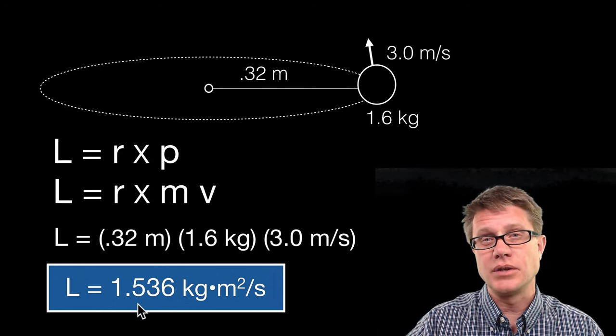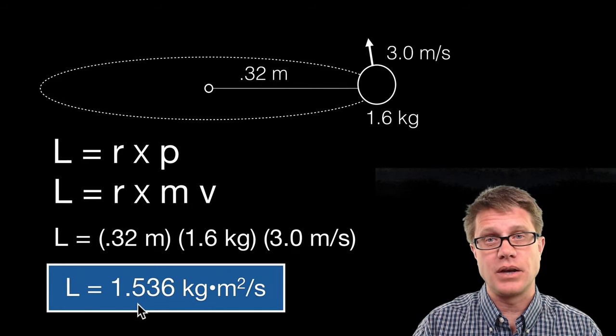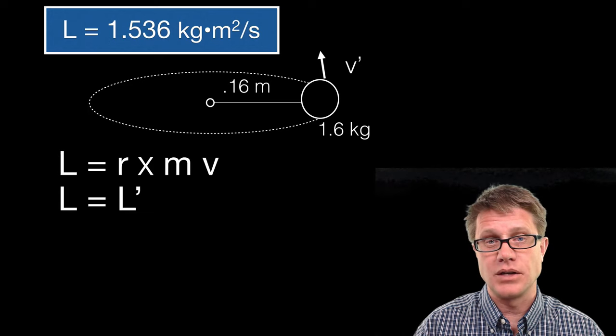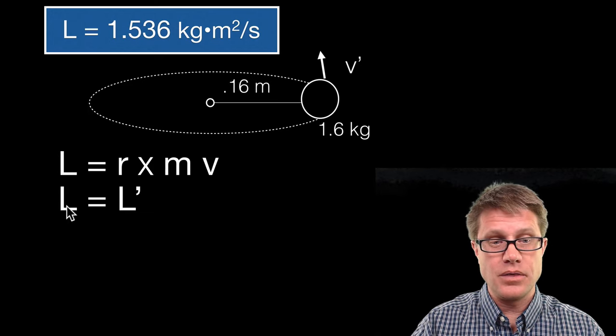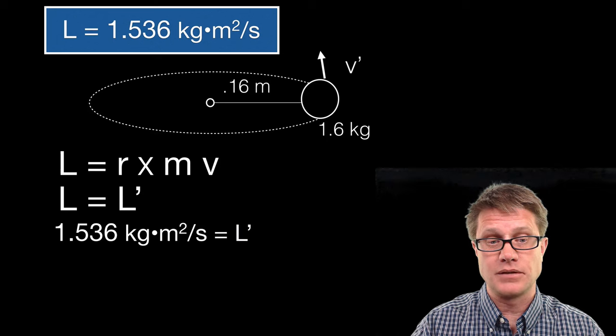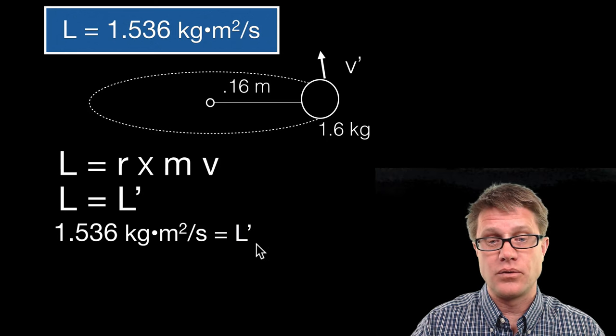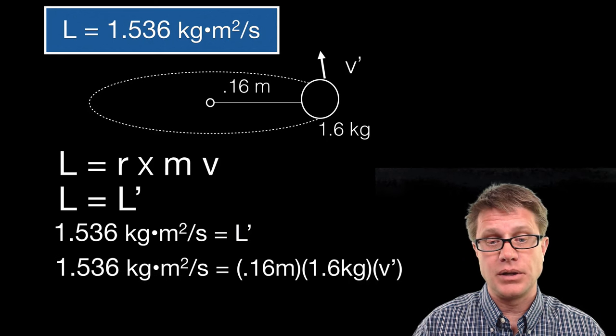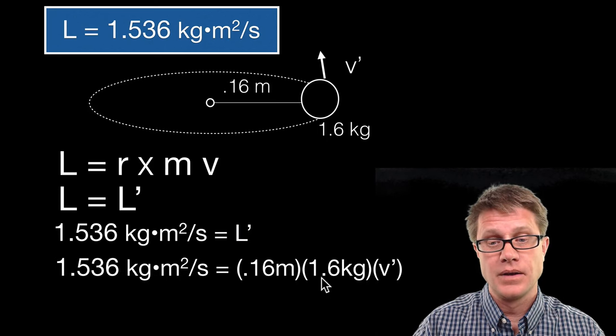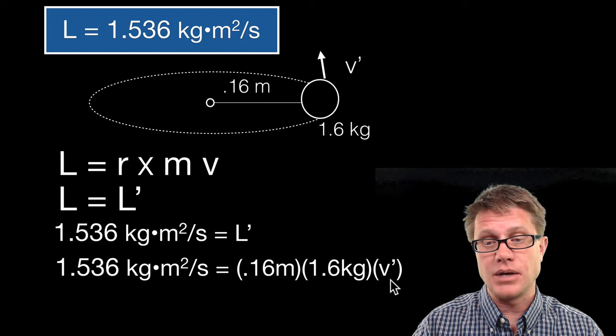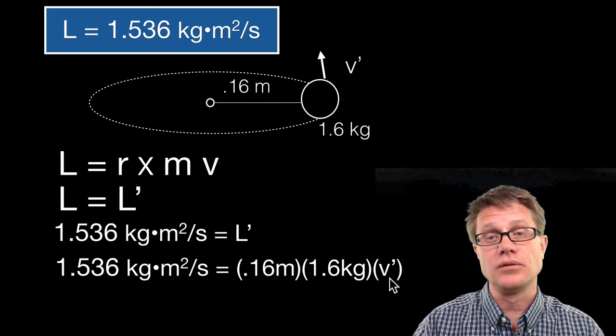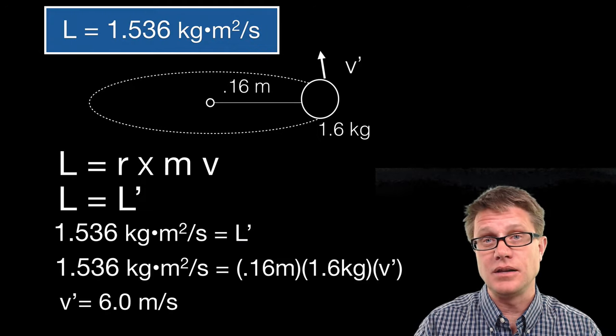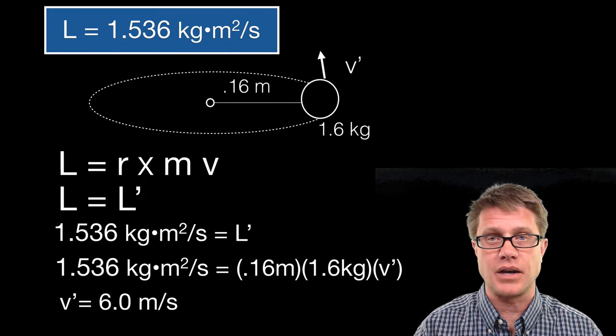Because we are going to see what happens if we take the radius and we cut the radius in half. So we are going to decrease that radius. So now it is 0.16 meters. And so I know this. I know my initial angular momentum. And now we are going to solve for my angular momentum after we have reduced the radius. And so I could plug in these values. It is now 0.16 here. The mass stays the same. But now we have a new final velocity. And so we could solve for that final velocity. And it is going to be twice the speed that it was before. Before it was 3.0 meters per second.